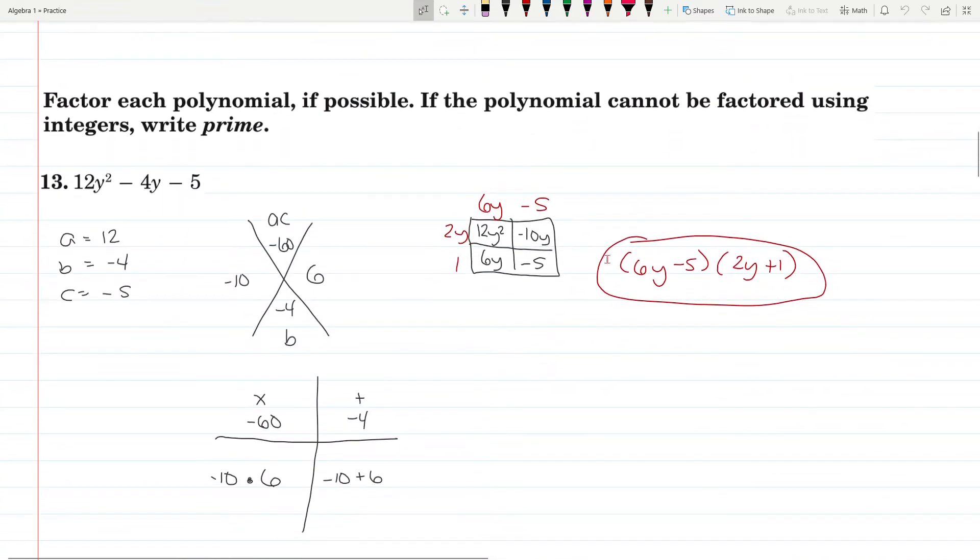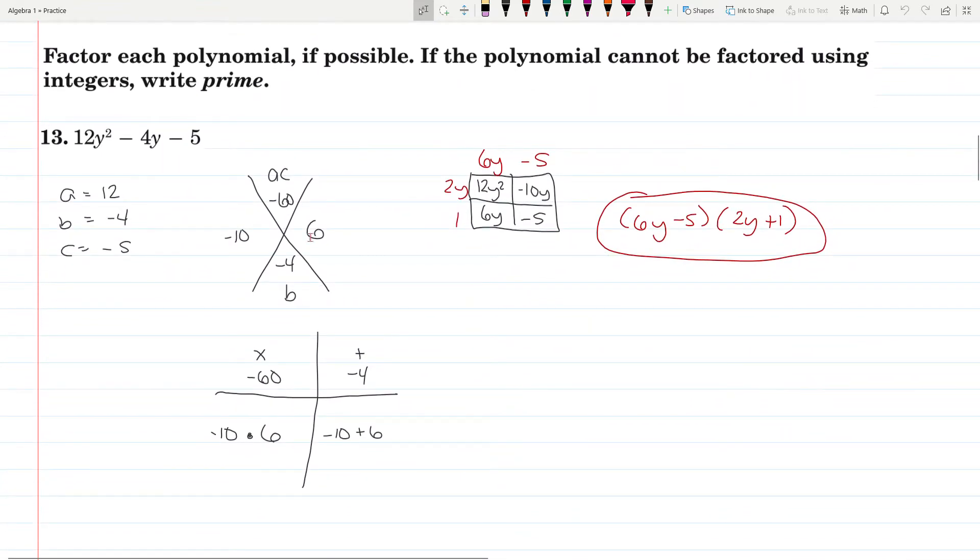Question 13: A is 12, B is negative 4, C is negative 5. So A times C is negative 60, B is negative 4. We're looking for something that multiplies to be negative 60 that adds up to negative 4. How about negative 10 and 6?